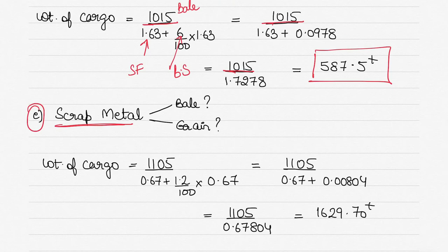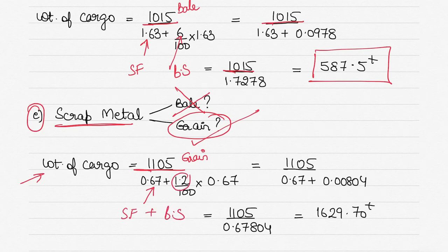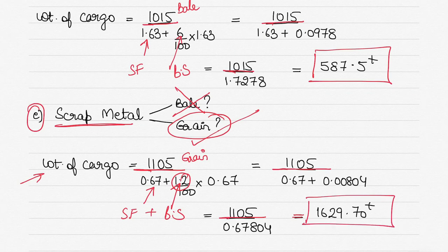Finally, scrap metal. If you're unsure, look for hints in the question. Scrap metal is not loaded in bags or cases — it's loaded in bulk, like grain. So we use grain capacity. The weight of cargo is grain capacity divided by stowage factor plus broken stowage of 1.2% of the stowage factor. It's a straightforward mathematical calculation from there.